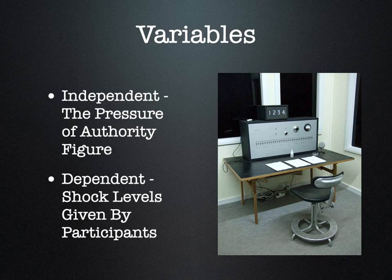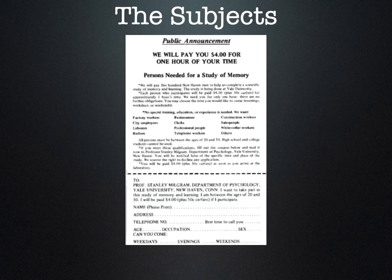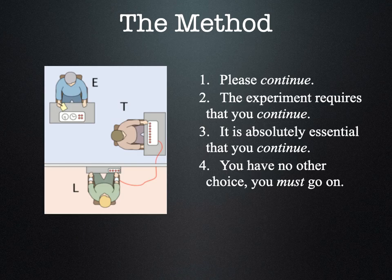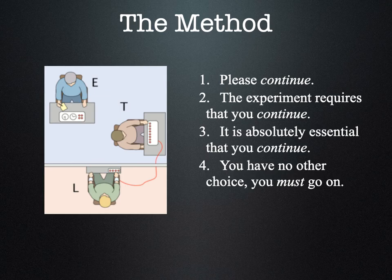They wanted to see when people would stop. As they went up the machine, the student would start to say, 'Wait, I'm being hurt, I want to stop this experiment.' The teacher would look and wonder whether to keep going. The experimenter would say one of four things: 'Please continue,' 'The experiment requires that you continue,' 'It is absolutely essential that you continue,' or 'You have no other choice, you must go on.' Those encouragements were meant to set up the circumstance of an authority figure insisting you keep going.